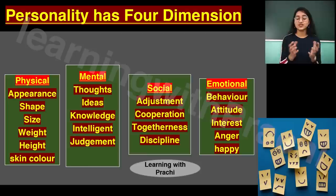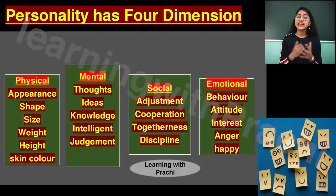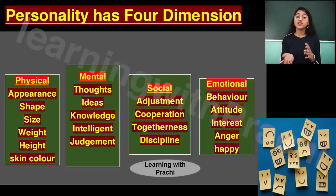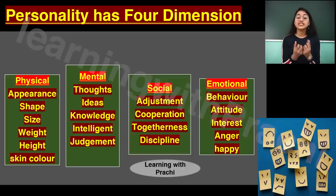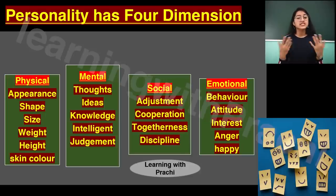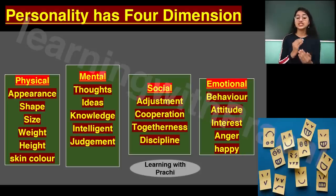The mental dimension includes how a person thinks, what their ideas are, how much knowledge they have, whether they are intelligent, whether they can differentiate right from wrong, and whether their judgment is good. The social factor involves how they behave in public, whether they can adjust with people, cooperate, maintain discipline, and whether they enjoy being with others or prefer to be alone.